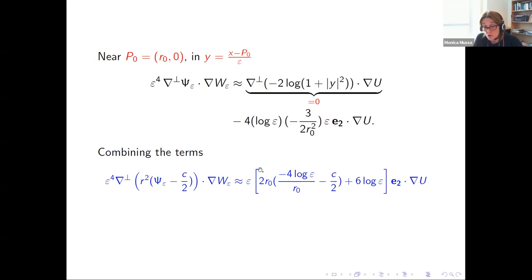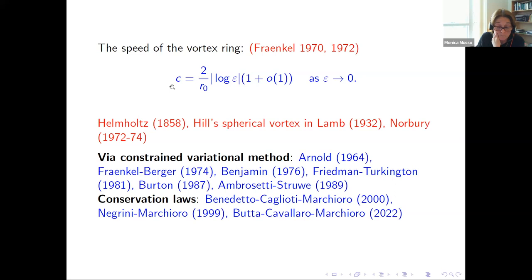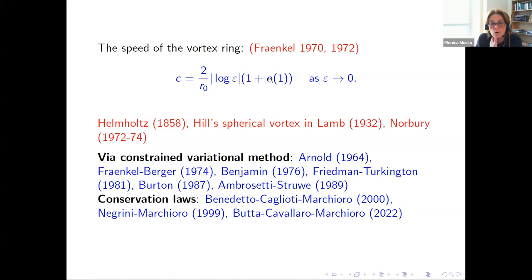For an approximate solution, this parenthesis must be zero. This gives exactly the formula found by Fraenkel in the 1970s: the constant velocity c is proportional to log of epsilon, multiplied by 2 divided by R0 where R0 is the radius of the ring. Fraenkel also found a lower-order correction — a constant divided by the square root of log epsilon — that depends on how the vorticity is regularized.